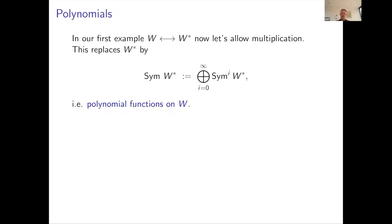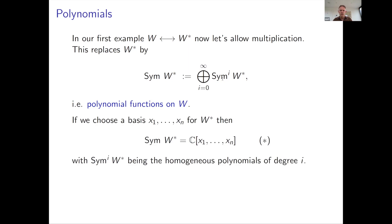The example we really care about: if we take a vector space and its linear functionals and now allow multiplication, we get products of linear functionals — in other words, polynomials. So we replace W-dual by the symmetric power of W-dual, the sum of all the symmetric powers of W-dual. This is all products of linear functions, but symmetric, because multiplying two linear functions doesn't depend on order. So we get polynomial functions on our vector space. If I choose a basis, this symmetric algebra is just the polynomial algebra, and the i-th graded piece is the homogeneous degree-i polynomials.